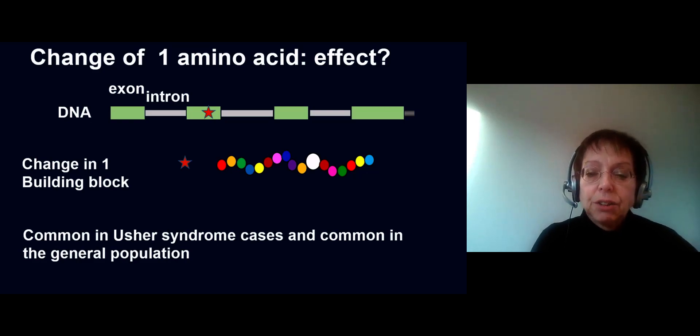These teams are now busy evaluating all changes that have been described in the USH2A gene to evaluate again whether all characteristics are there to call it deleterious. But a very important tool to evaluate whether a change in amino acid can be called deleterious is testing of family members.